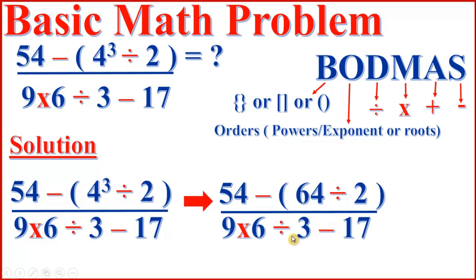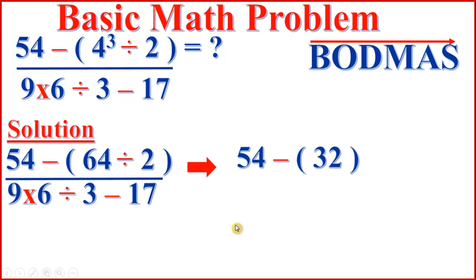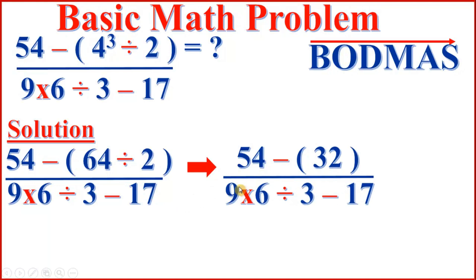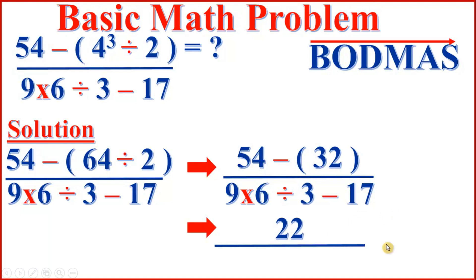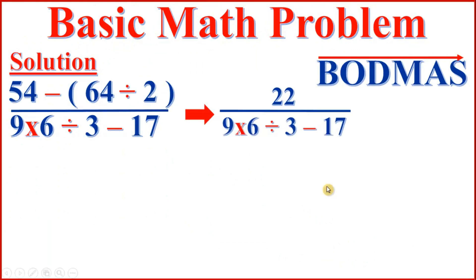So we have 9 times 6 divided by 3 minus 17 in the denominator. Then 64 divided by 2 equals 32. So the numerator becomes 54 minus 32, which is 22. The numerator is now 22 over 9 times 6 divided by 3 minus 17.